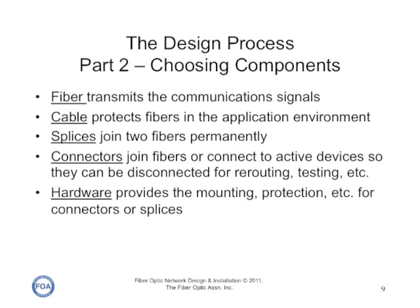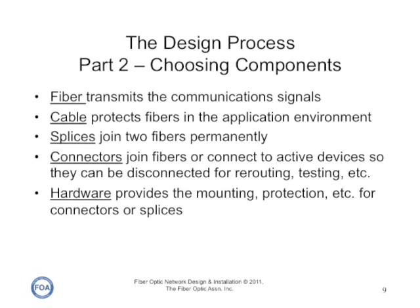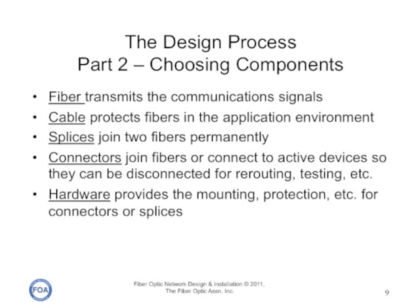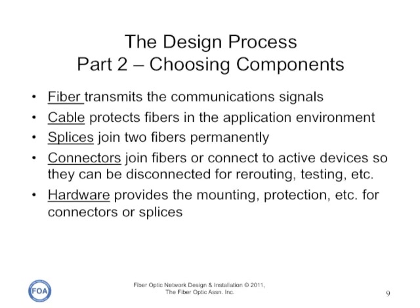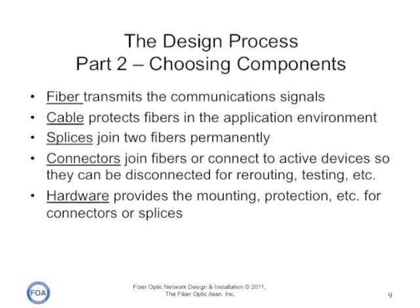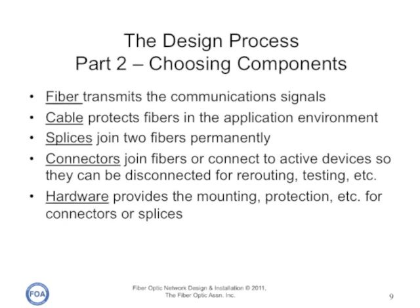Once we have a basic idea of what our network is going to be, we start choosing components. We choose fiber that transmits the communication signals, and it must be appropriate for the networks we are using. The cable would be chosen to protect the fibers in the application environment — aerial, underground, direct buried, or underwater. Splices will be chosen and specified when we join two fibers permanently, concatenating cables. Connectors will be specified so they are compatible with the equipment we are using and perhaps hardware that is already installed. And the most difficult and largest number of components are the hardware that provides the mounting, protection, and containment of all the cables, connectors, and splices in the system.